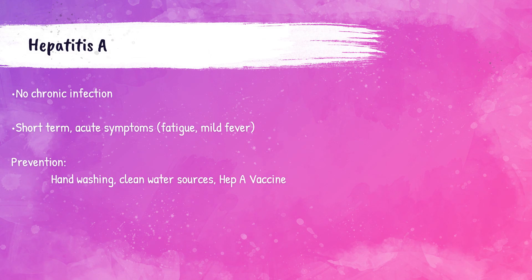Hepatitis A, or HAV, is acquired from the fecal-oral route, meaning a patient must come in contact with feces infected with the virus in either food or water. HAV is usually short-term with mild symptoms such as fever and general fatigue. Because HAV spreads via the fecal-oral route, it can be avoided by proper hand-washing and clean water sources. There is also an HAV vaccine currently available.